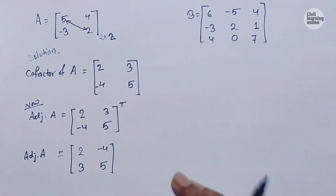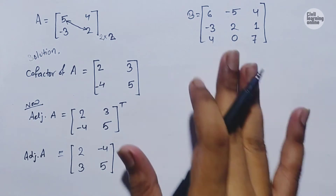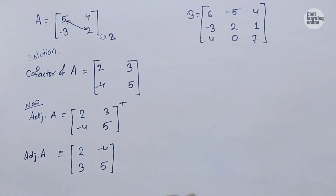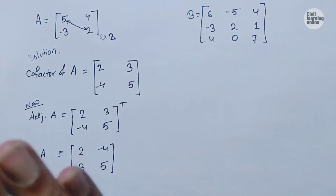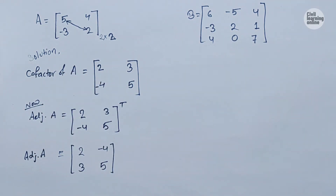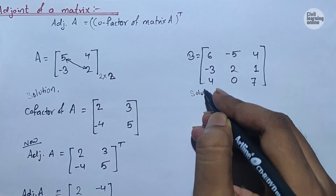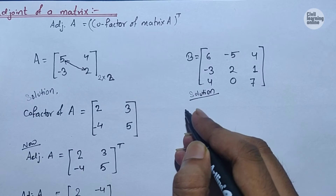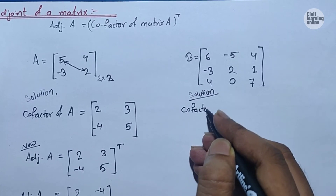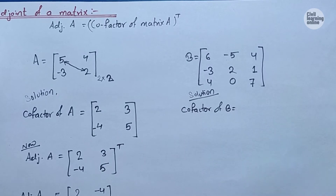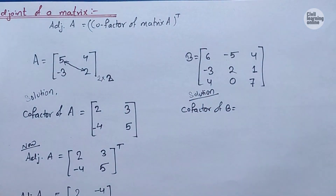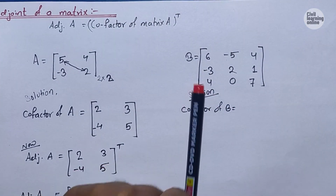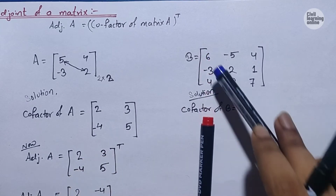Now it's time to calculate the cofactor of matrix B and then we will calculate its adjoint. It is a bit different, and it is very important from the exam point of view, so watch this calculation carefully. To calculate the cofactor of B, first we will calculate the cofactor of element 6. For that, we need to cover the entire row and column in which the element 6 lies.